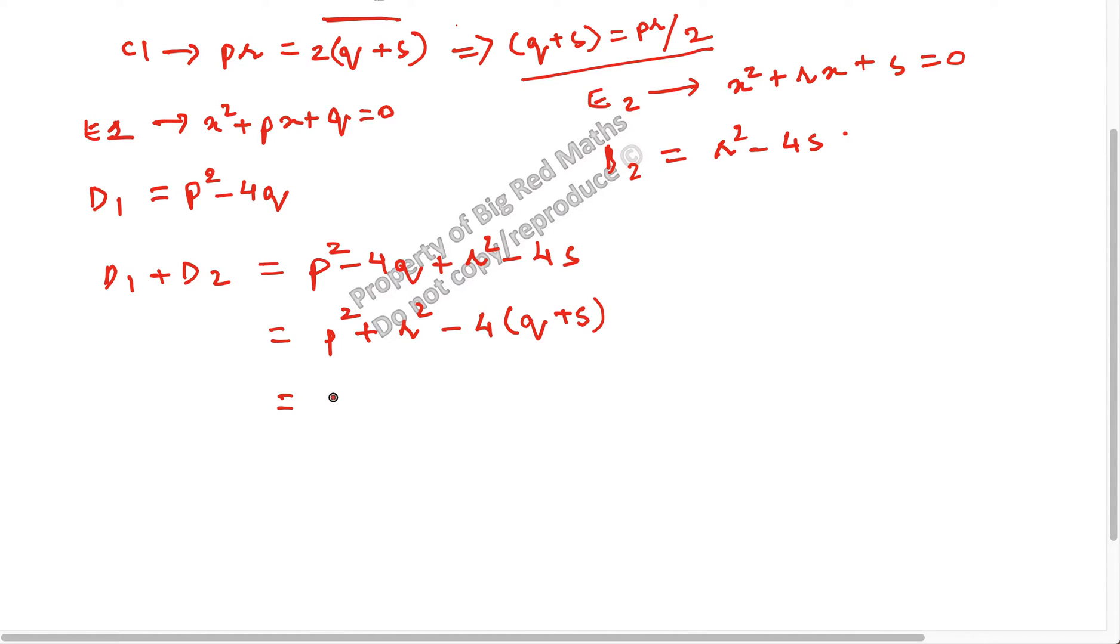And I will tell you why am I doing that in the next step. So it will become p² + r² - 4 times of PR by 2. And this whole thing now becomes p² + r² - 2PR, which is equal to (p - r)².